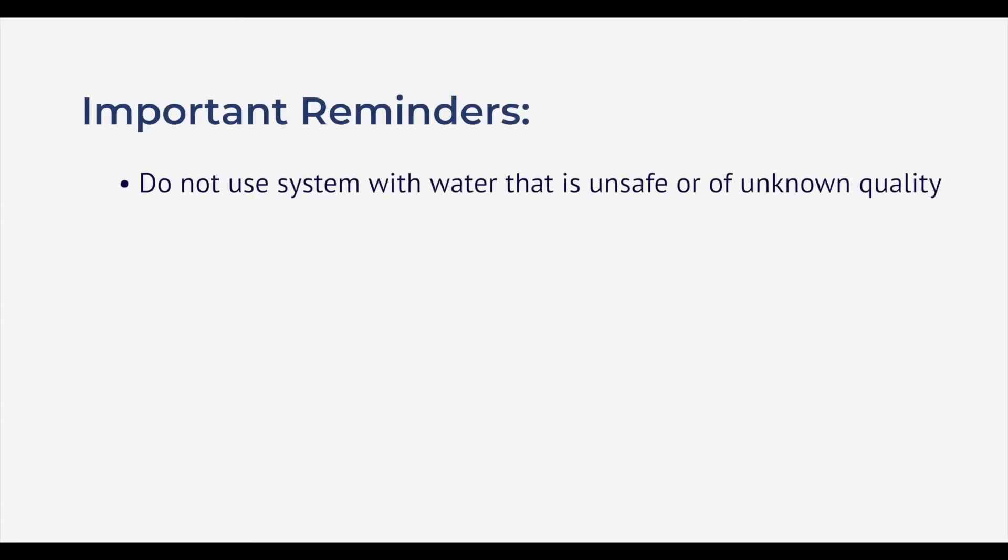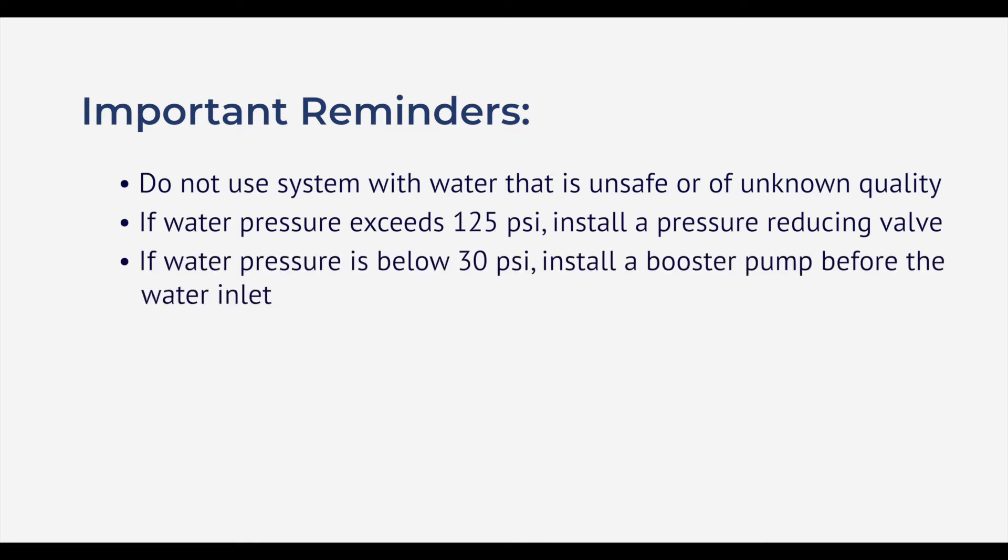Do not use a system with water that is unsafe or of unknown quality. If your water pressure exceeds 125 psi, install a pressure-reducing valve. If the water pressure is under 30 psi, install a booster pump before the water inlet. The system operating temperature is between 40 and 110 degrees Fahrenheit. Do not use the unit on hot water supplies.